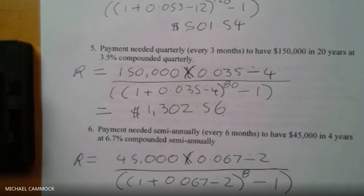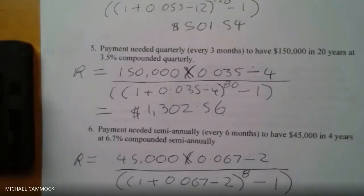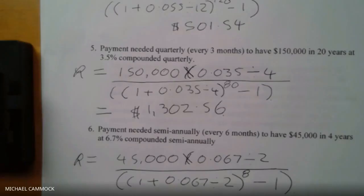Work the top part: 45,000 times 0.067 divided by 2. If you get a fraction, press the S-to-D key to convert to decimal. The answer is $1,507.50. Students confirm they got the same number.